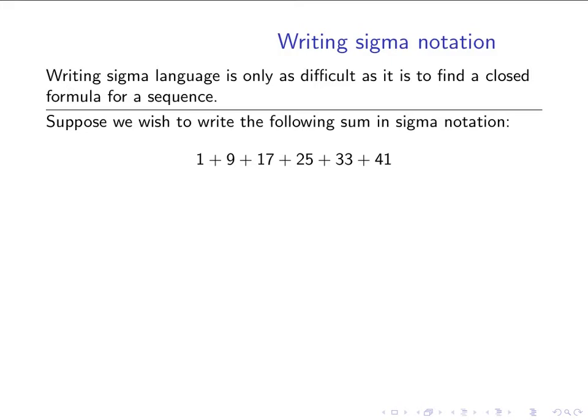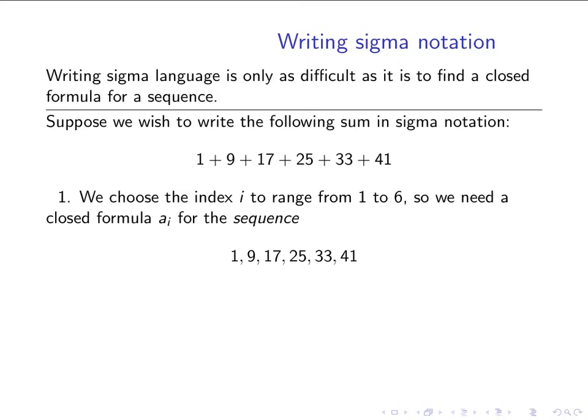For example, if we wanted to write the sum 1 plus 9 plus 17 plus 25 plus 33 plus 41 in sigma notation, then I can see that the first thing I need to do is choose an index variable and a range. That's sort of like the k before. I'm going to use a different letter here, i, just to emphasize that the actual name of the index variable really doesn't matter a whole lot. So there are six values there, so I can think of those as coming from an index i ranging from 1 to 6.